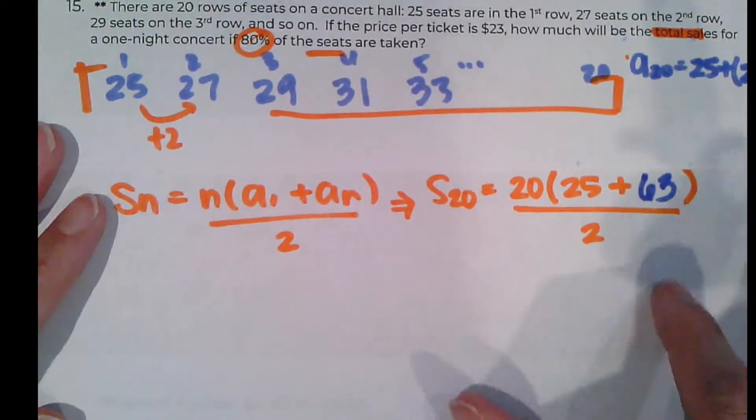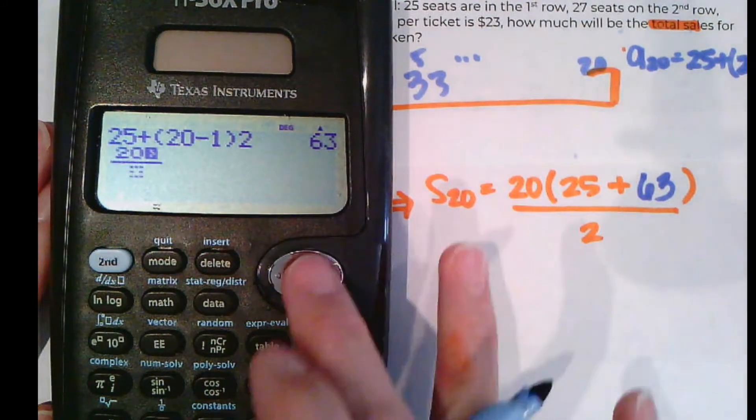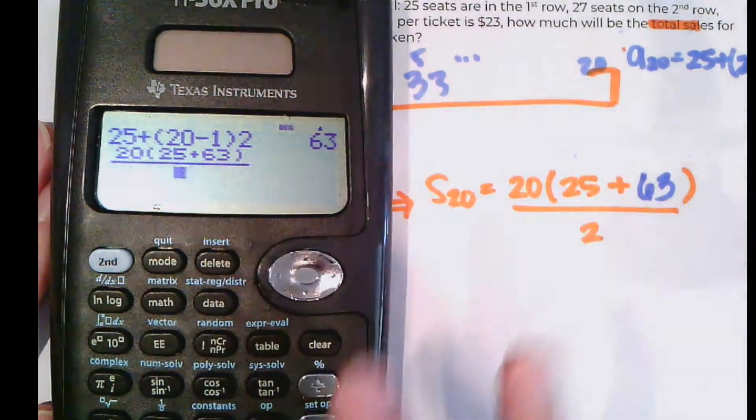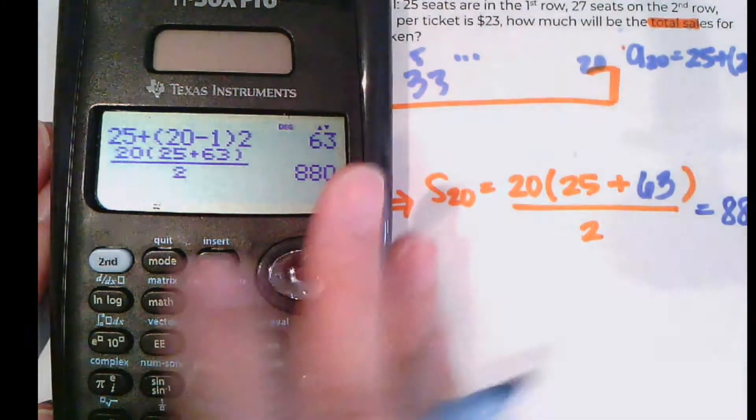Okay, and this is my calculation to figure out how many total seats there are. 20, 25 plus 63, all over 2. There's 880 seats in the actual theater.